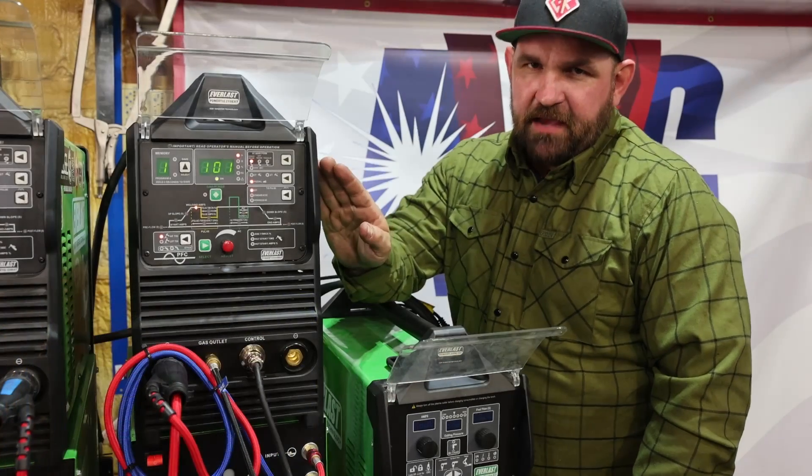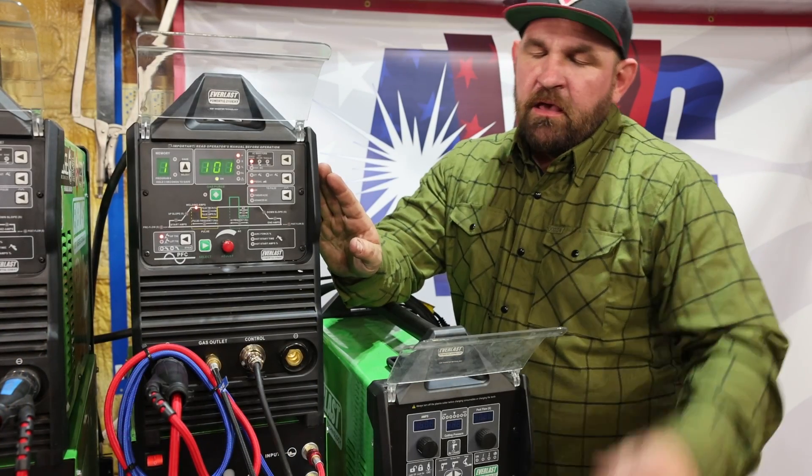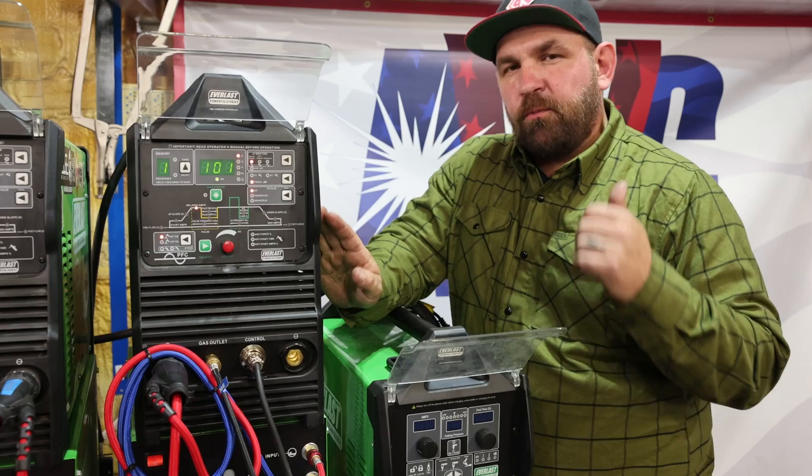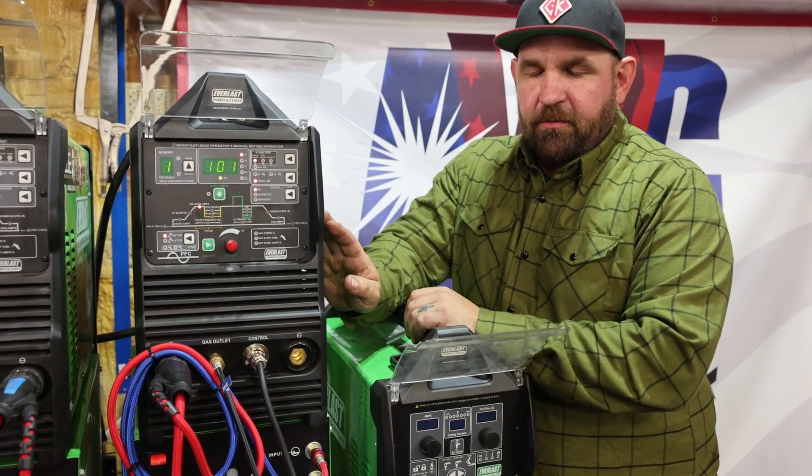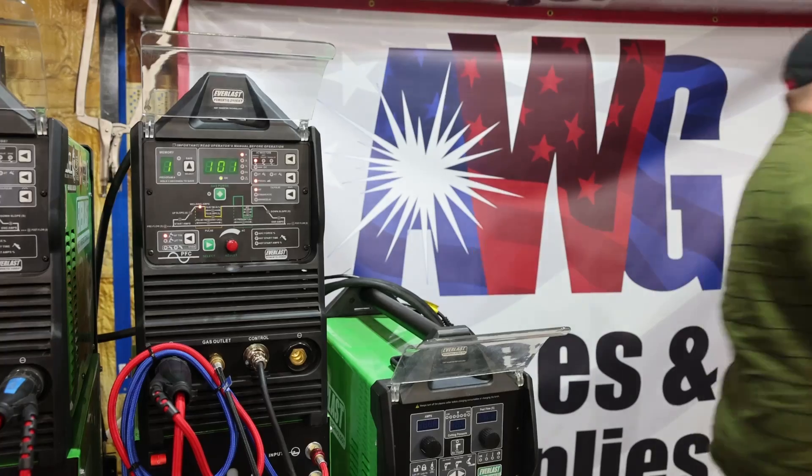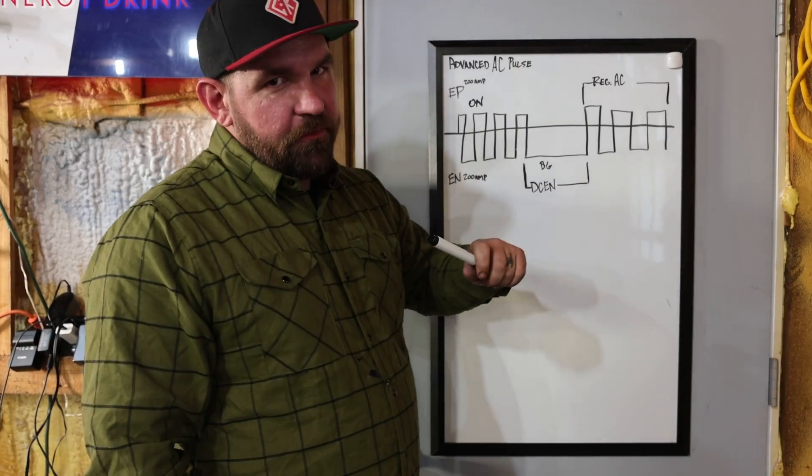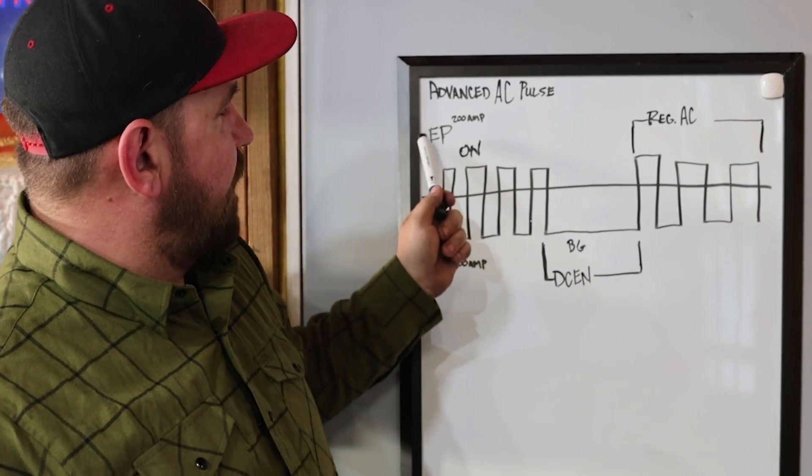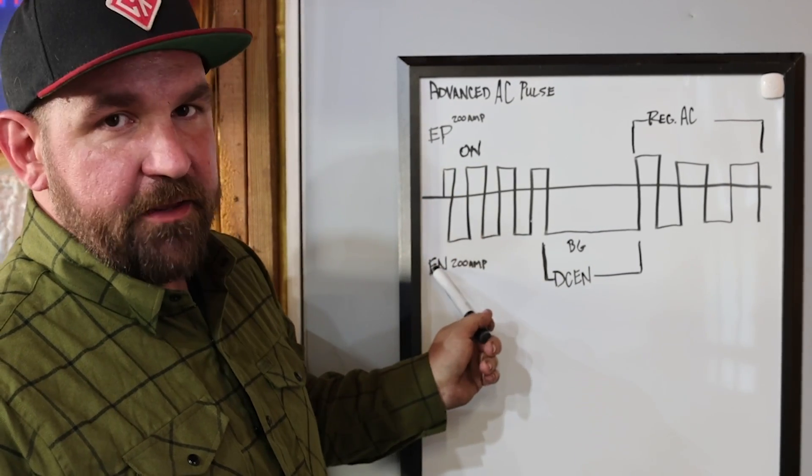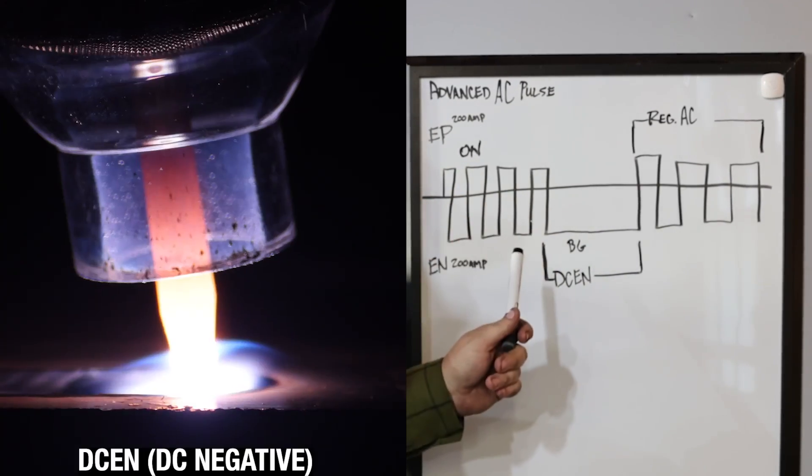Now before I show you the advanced AC pulse settings on the machine, I want to go over to the whiteboard and show you guys what's actually going on with your waveform. So let's head over there and I'll try to explain it. Alright, now we're over at the whiteboard so we can see what's going on here. So you can see we still have our electrode positive, electrode negative, just like we're running a regular AC waveform.